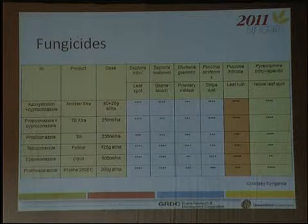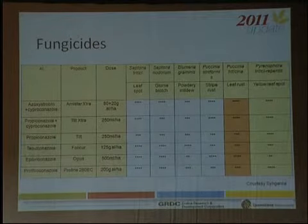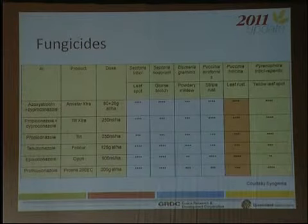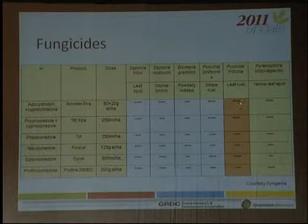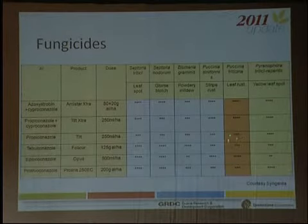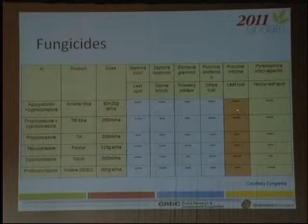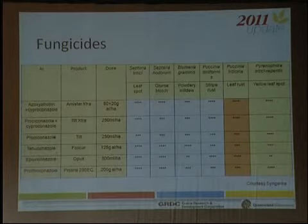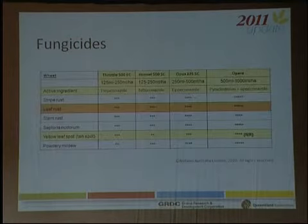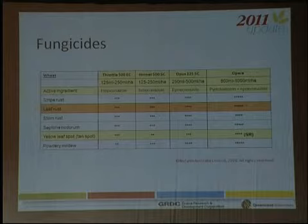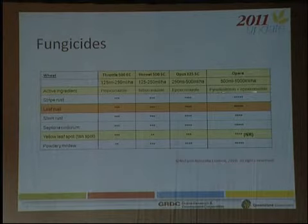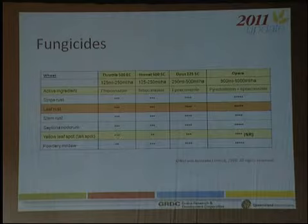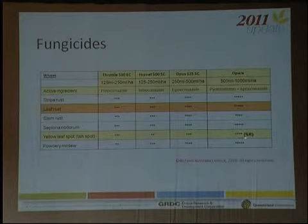I'd like to acknowledge the input of both Syngenta and Nufarm in highlighting their recommendations for controlling these diseases. For leaf rust, the preferred options are MSR Extra, Tilt Extra, with propiconazole rated as not as good as either of those two, nor as good as epoxiconazole. The Nufarm data agrees — good performers are epoxiconazole and Opera, a strobilurin plus epoxiconazole combination. For yellow spot control, Opera again seems to be the preferred one, though not yet registered.